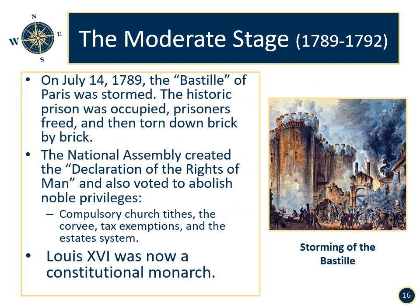The moderate stage continued. On July 14, 1789, the Bastille of Paris was stormed. This historic prison was occupied, prisoners were freed, and then it was torn down brick by brick. The National Assembly created the Declaration of the Rights of Man and also voted to abolish noble privileges. Compulsory church tithing, the Corvée (service to the State), tax exemptions, and the estate system were also abolished. Louis XVI was now a Constitutional Monarch — one whose powers are limited by what is prescribed in the Constitution. It is interesting to note that at this time, Jews were granted citizenship and slavery was also abolished, though it would later be brought back under Napoleon.